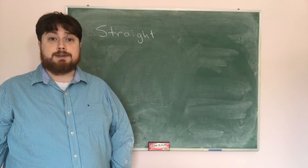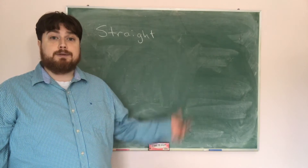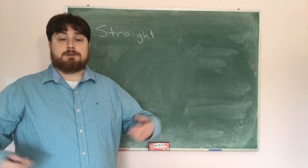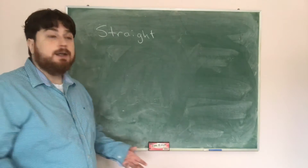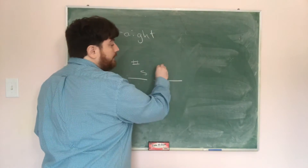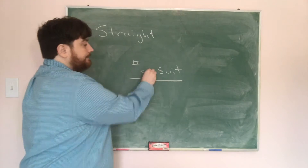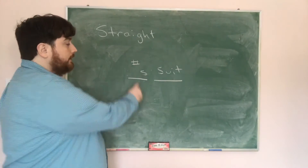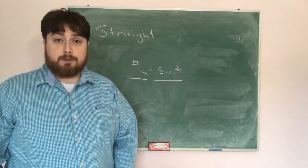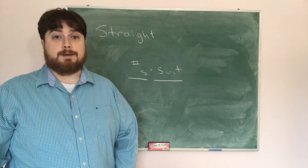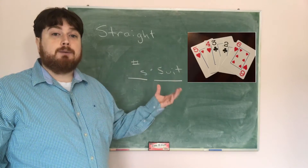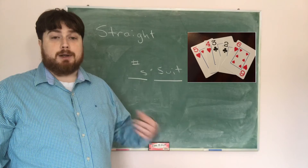Now we've counted flushes, and I want to move on to counting the number of straights in a five-card hand. The same way we did before, we're going to think about numbers first, then the suit for each card, and multiply the two counts together to get the total number of straights.